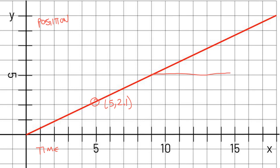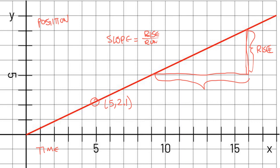As stated before, when we calculate the slope of this line, that's going to give us the velocity. Remember that slope is equal to rise over run — we have the rise here and the run here. This is a constant slope because we have a straight line. If you measure the slope anywhere along this line, you're going to get the same value, which is how we know it's a constant slope.